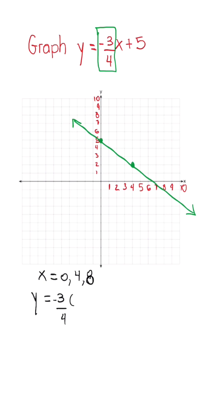When x is 4, we notice that the 4s are going to cancel out. Negative 3 times 1 is negative 3, and then negative 3 plus 5 is 2. So we know a second ordered pair is going to be (4, 2).